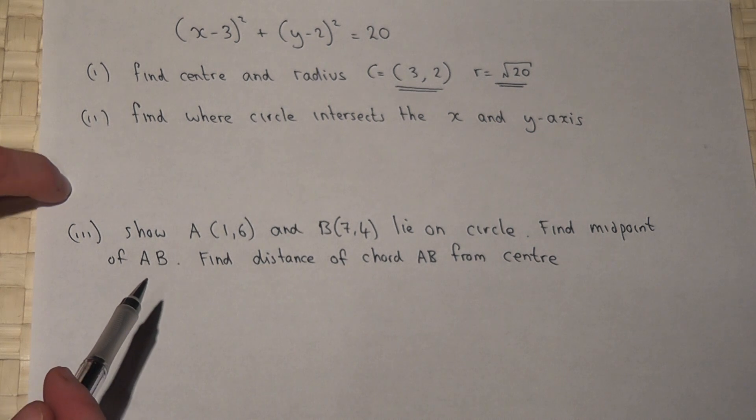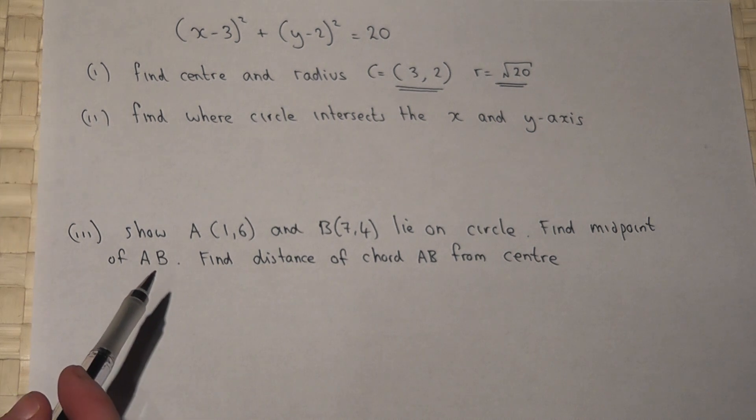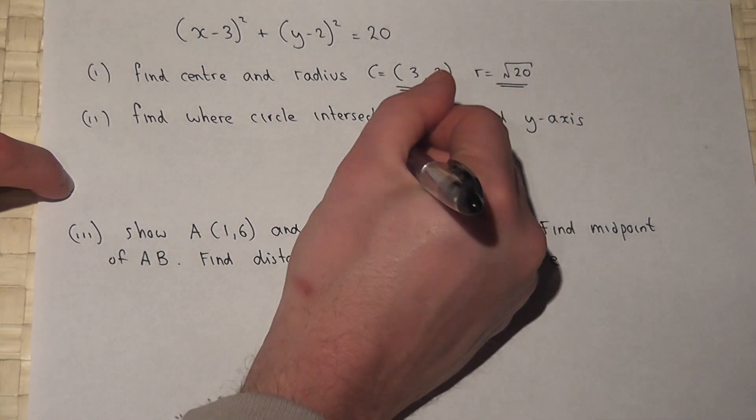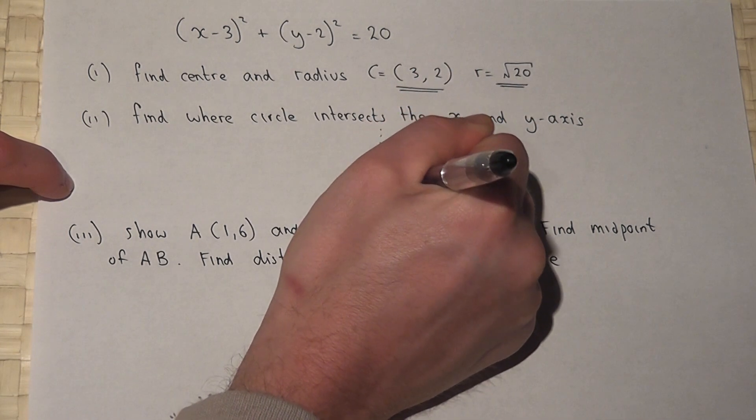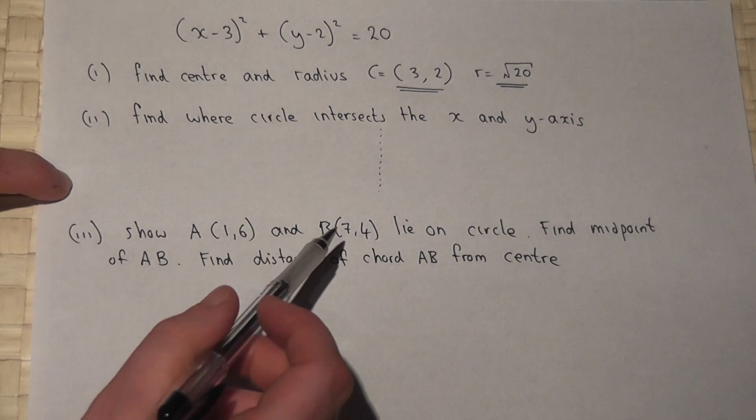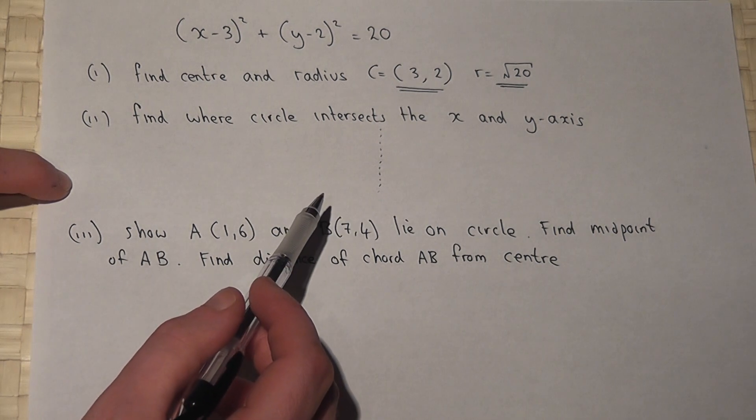Part 2 asks us to find where the circle intersects the x and y axis. The x-axis is where y equals 0, so if I let y equal 0, I get the following.